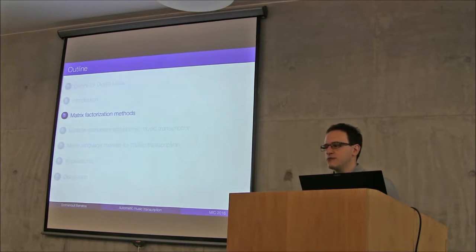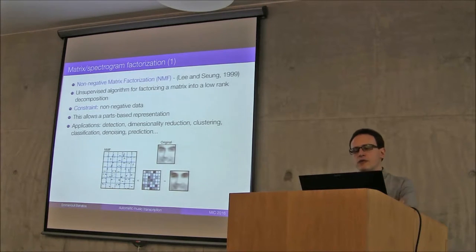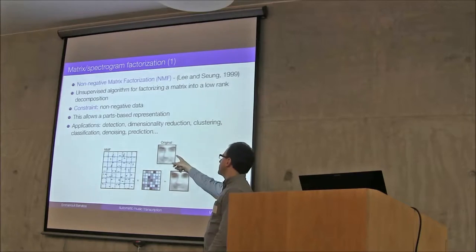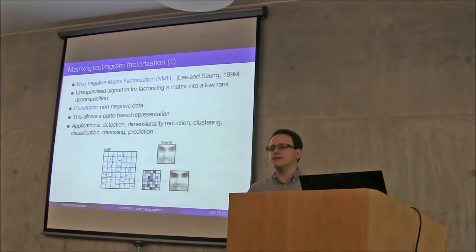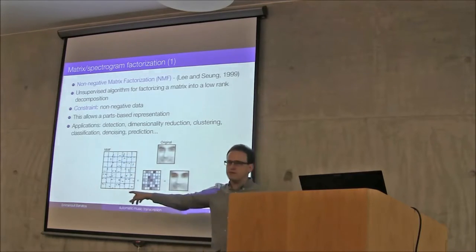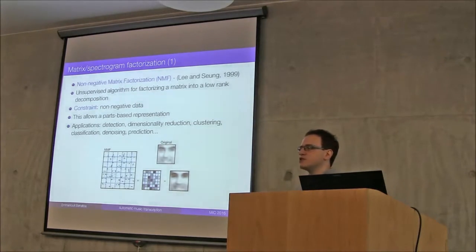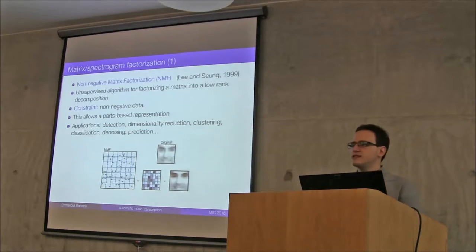Moving to matrix factorization methods: there was a paper in Nature in 1999 by Lee and Seung proposing non-negative matrix factorization, NMF. They came up with an algorithm that could decompose a matrix into a low-rank, non-negative decomposition. Their main focus was image processing — for example, decomposing a face image into local parts: one eye, another eye, a nose, a mouth, and so on, forming a dictionary of face elements. The big constraint was that the data is non-negative, making the model purely additive.